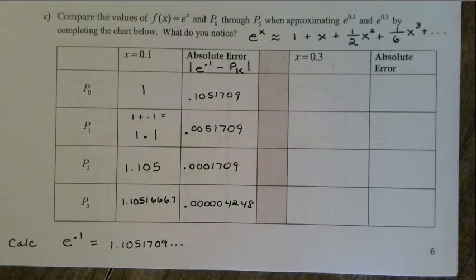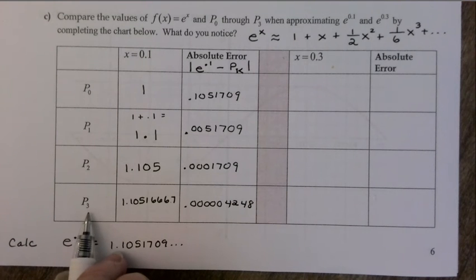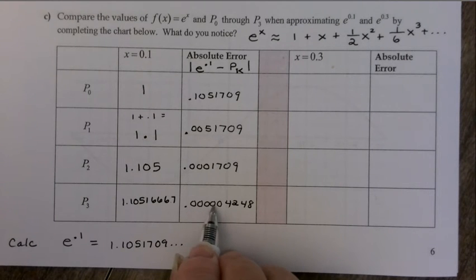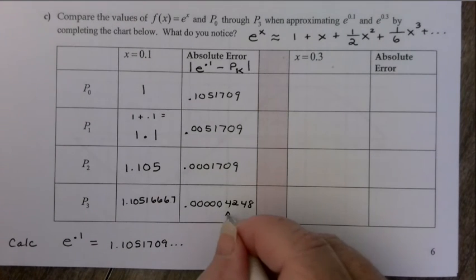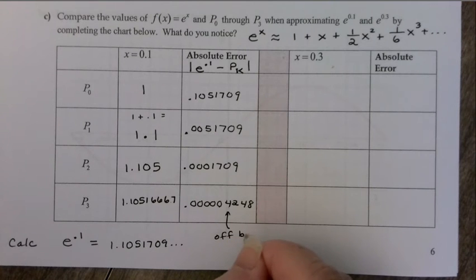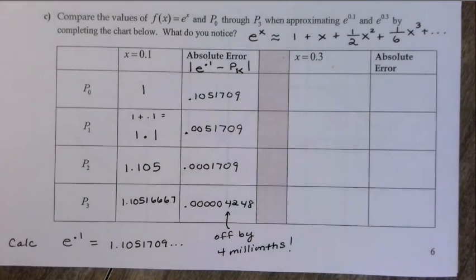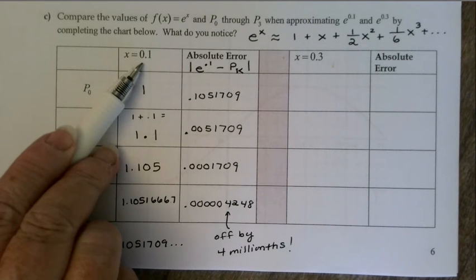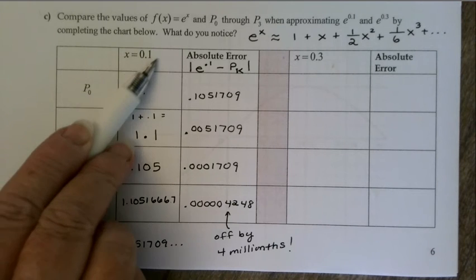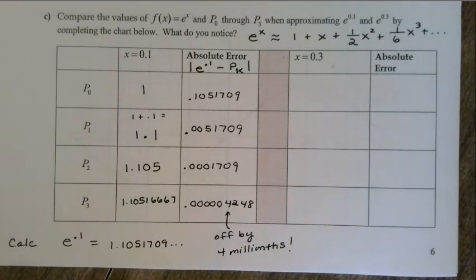Notice what this is telling us: at just the p3 level — only a third-degree Taylor approximation — we're off only in the millionths place. By p3 we're off by about 4 millionths, which is a really, really good approximation. Keep in mind we picked an x value very close to our a value of 0, so it's not surprising that we got an extremely good approximation here.